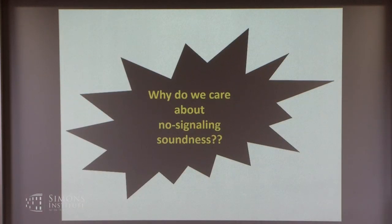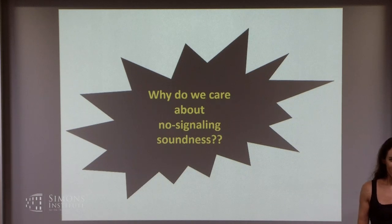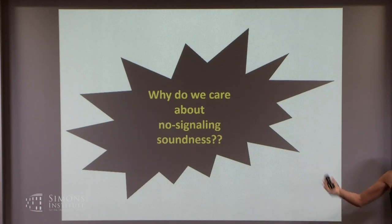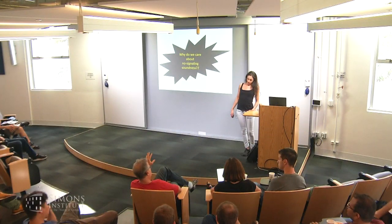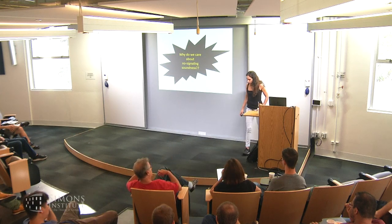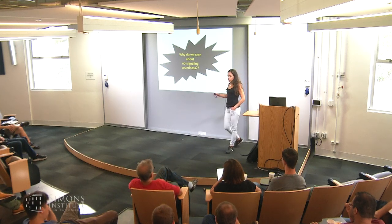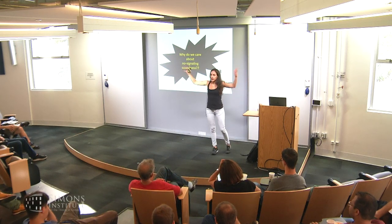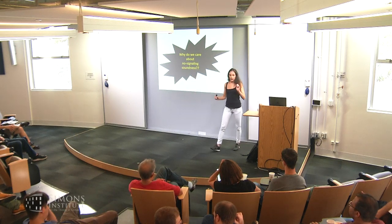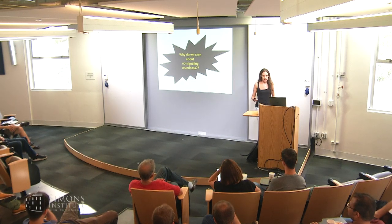To answer why we care: I defined this notion and it seems very similar to classical in a sense. Even though I'm letting you see the other query, I'm not really letting you depend on it in any way. One more clarification: MIP, multiprover interactive proofs, usually involves a query-answer exchange — just one round. That's how we think of this model, and also in the no-signaling setting.